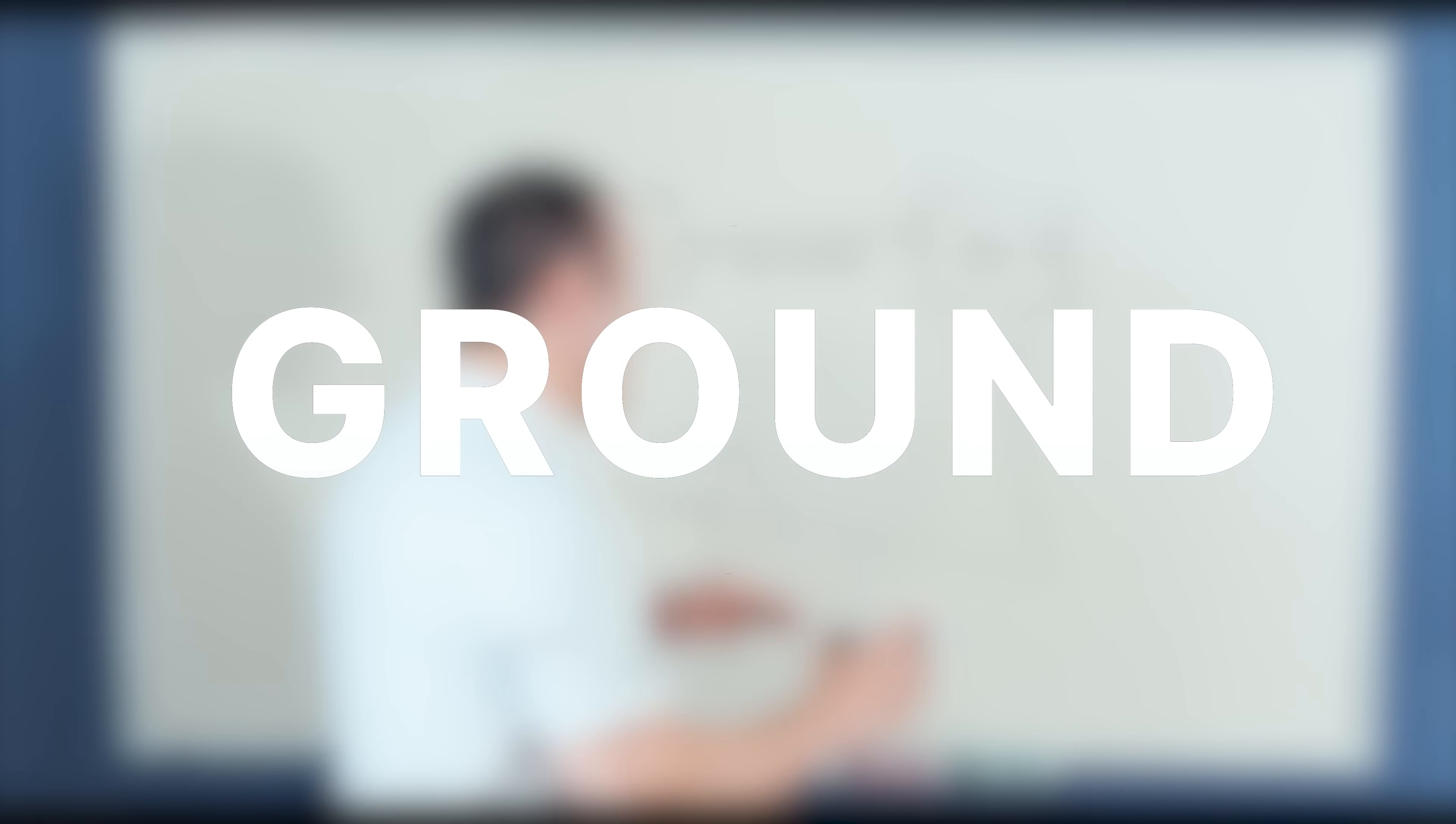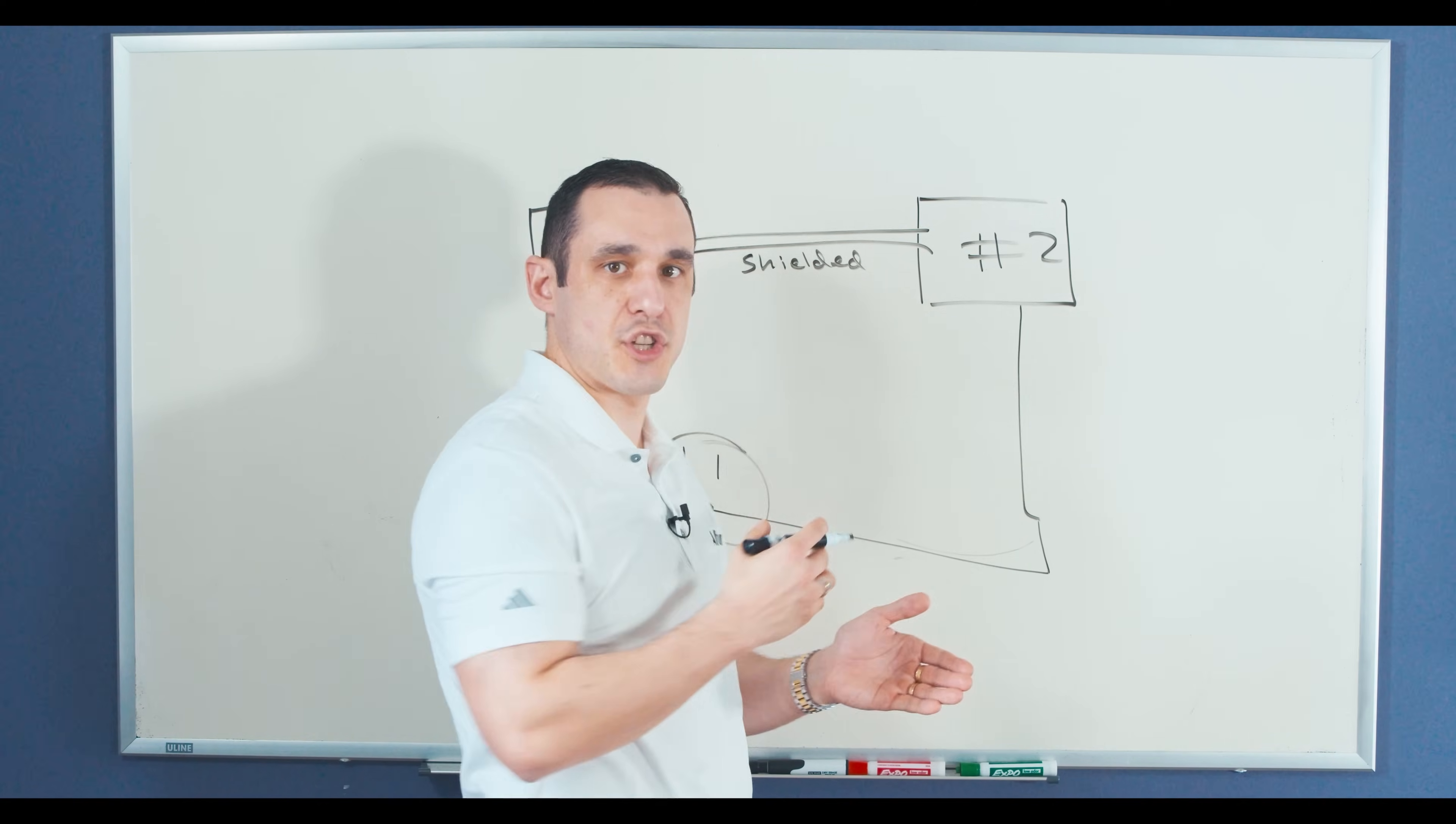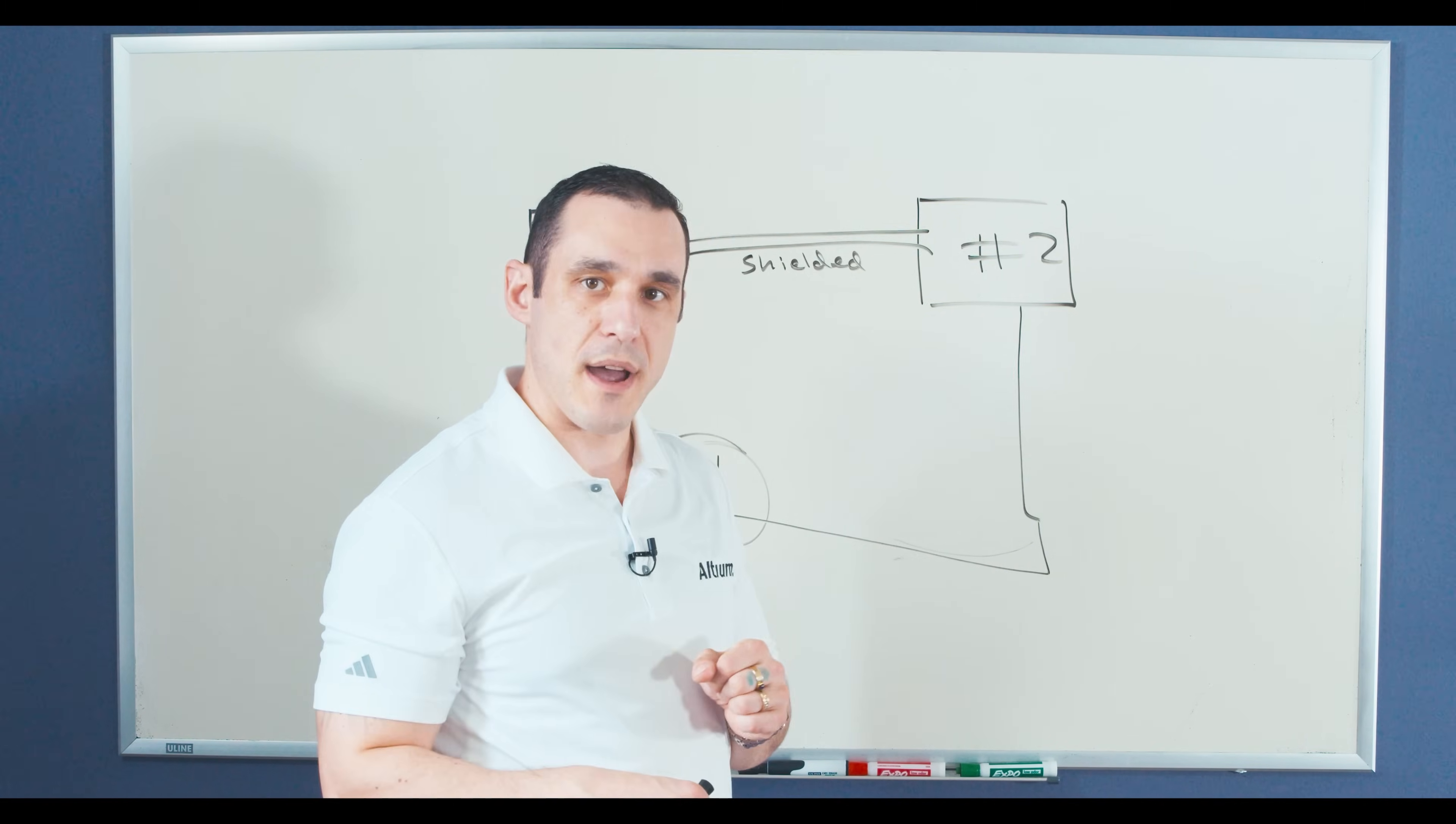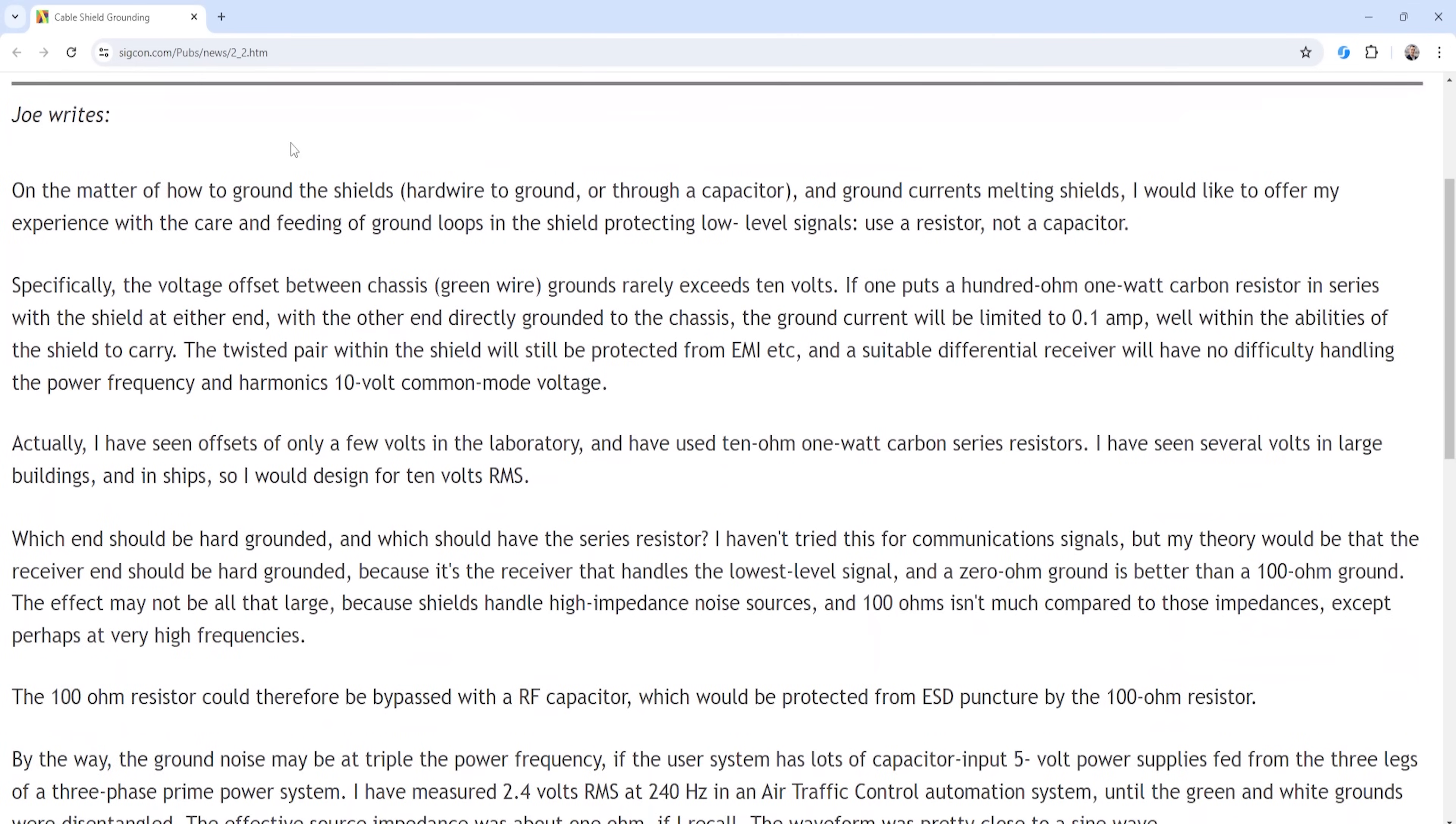Now if we did have a ground loop going on in this system, what kind of potential offsets could we expect to then drive a current over this shielded cable? Well, let's take a look at some advice on Howard Johnson's website to see what those voltages might be. So here on Howard Johnson's website sigcon.com, there is an article on cable shield grounding, and you can see here that there's a guy Joe who recounts his experience looking at the voltage offsets between the chassis grounds, and you can see here in his correspondence, the voltage offset between chassis grounds rarely exceeds 10 volts.